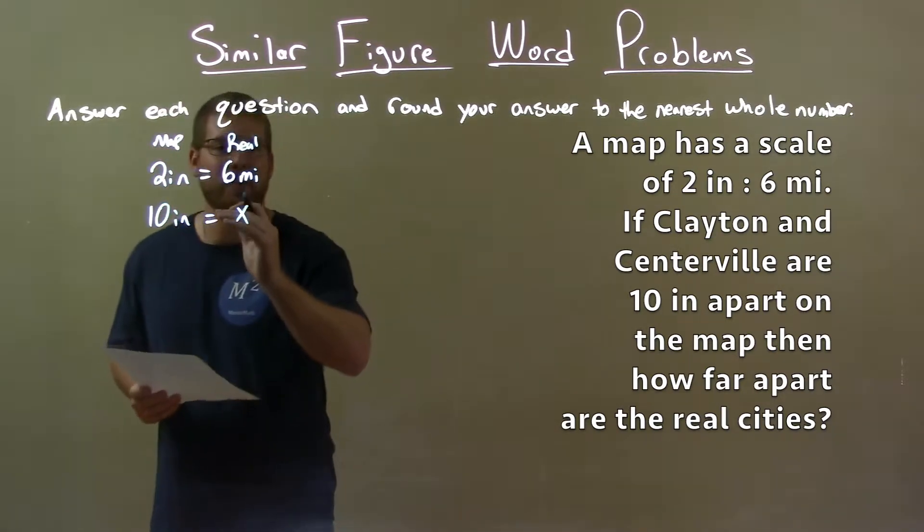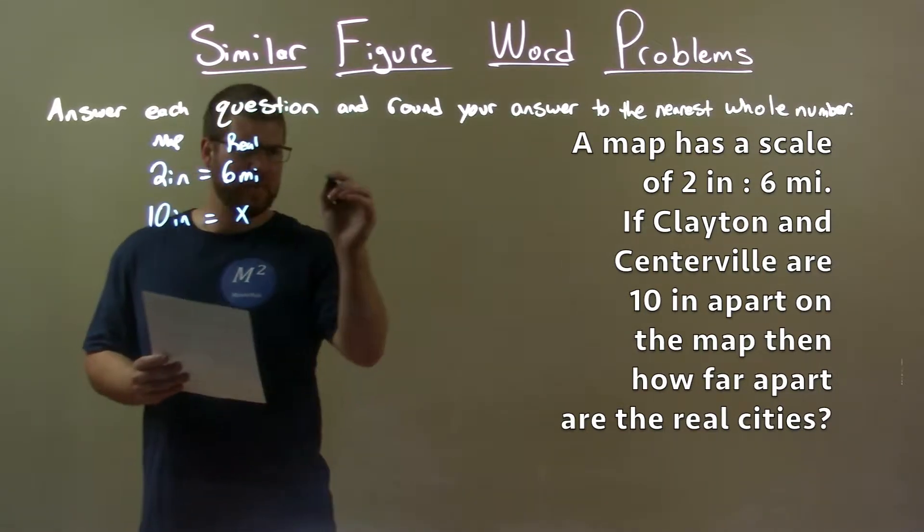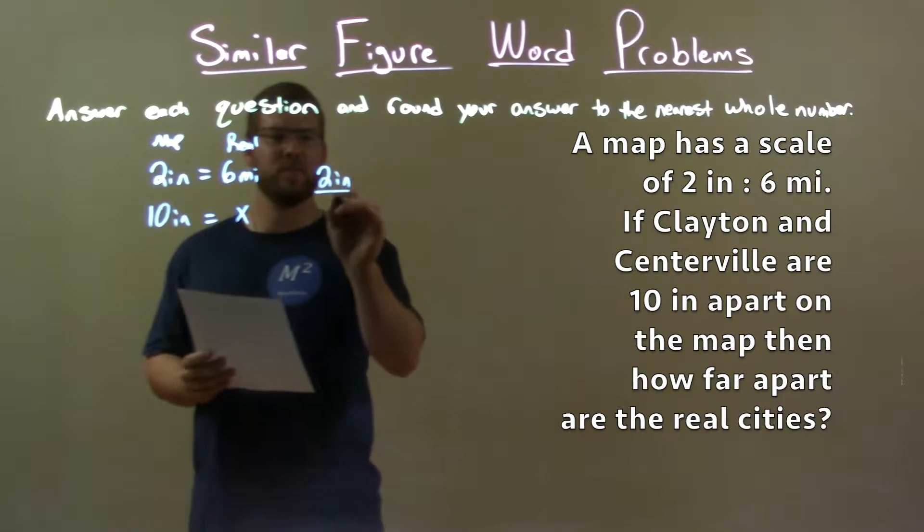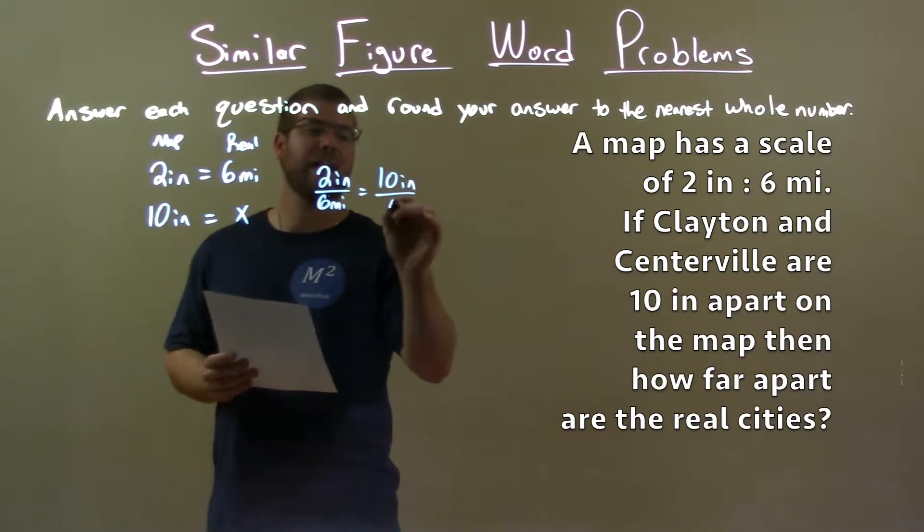Well, with that information here that we created, let's create a proportion. 2 inches to 6 miles should equal 10 inches to X miles.